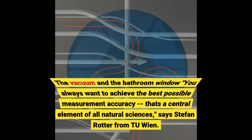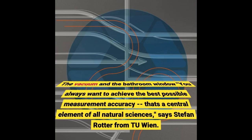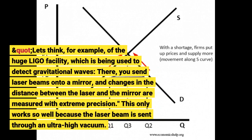The vacuum and the bathroom window. You always want to achieve the best possible measurement accuracy — that's a central element of all natural sciences, says Stefan Rotter from TU Wien. Let's think, for example, of the huge LIGO facility, which is being used to detect gravitational waves.